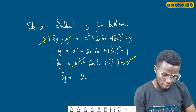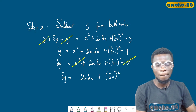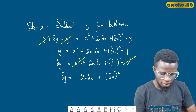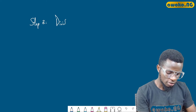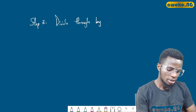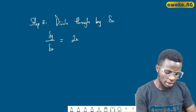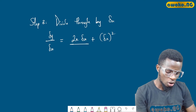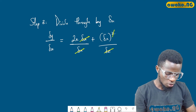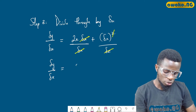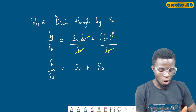So δy = 2x·δx + (δx)². The next step is step three: divide through by δx. Dividing through, δy/δx = (2x·δx + (δx)²) / δx. The δx cancels in the first term and leaves one, so δy/δx = 2x + δx.